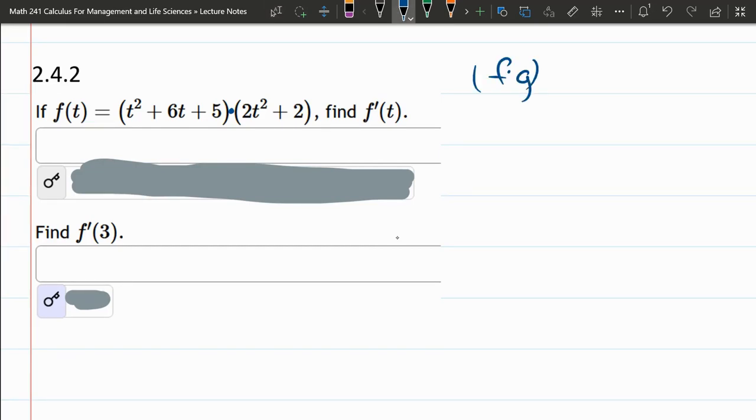F times G prime is F prime G plus F times G prime. So that's F, that's G.